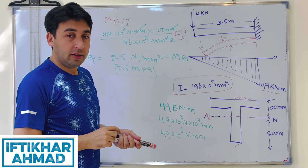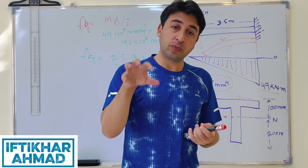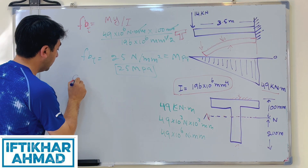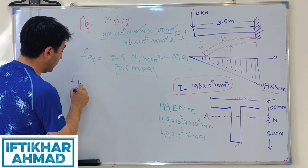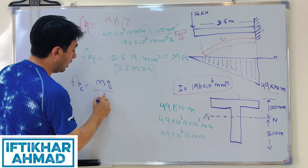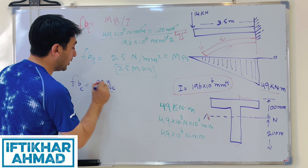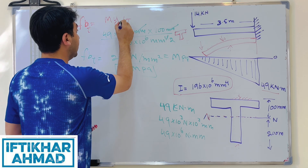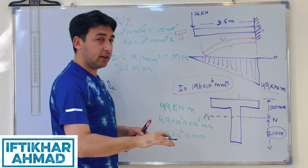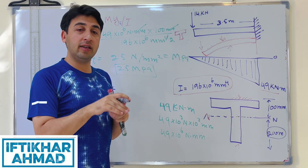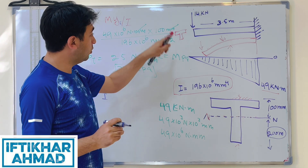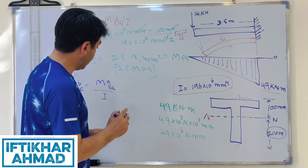Now for bending stresses in compression, we use the same formula f_b = M·y / I, but this time y is the compression distance of 200 mm, since the bottom layers experience compression.